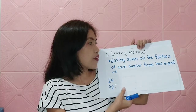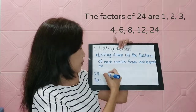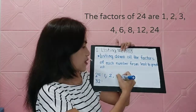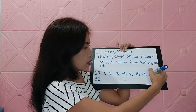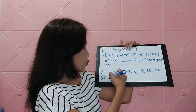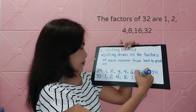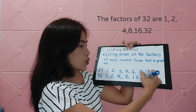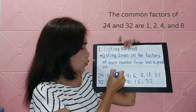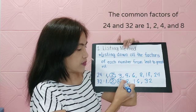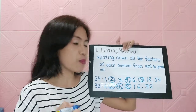Let's put down the factors for these numbers. We have 24 and 32. The factors of 24 are 1, 2, 3, 4, 6, 8, 18, and 24. And the factors of 32 are 1, 2, 4, 8, 16, and 32. We arrange them from least to greatest. The common factors are 2, 4, and 8, but the greatest common factor is 8.